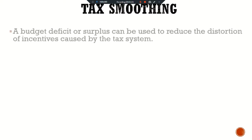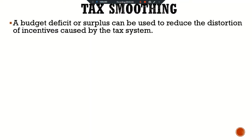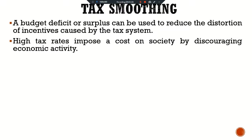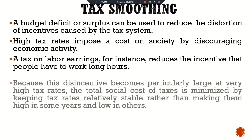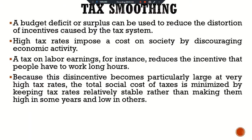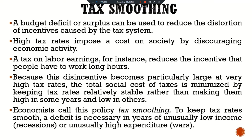The second reason is tax smoothing. A budget deficit or surplus can be used to reduce the distortion of incentives caused by the tax system. High tax rates impose a cost on society by discouraging economic activity. A tax on labor earnings, for instance, reduces the incentive that people have to work long hours. Because this disincentive becomes particularly large at a very high tax rate, the total social cost of taxes is minimized by keeping tax rates relatively stable rather than making them high in some years and low in others. Economists call this policy tax smoothing.